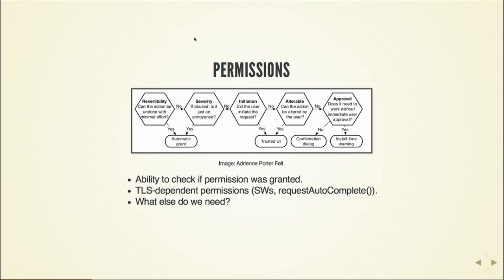We do have models on the web for when we introduce new APIs about how we make a decision whether we want an API or not. Adrian Porterfeld has a nice little diagram. It essentially has very simple decisions — for instance, can the action be undone with minimal effort, yes or no? If it's yes, then automatic grant. If it's no, you ask another question about severity. From that, you can create an API and decide on the permission level you want to give it.